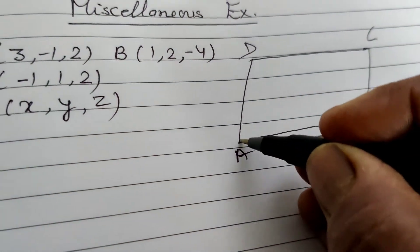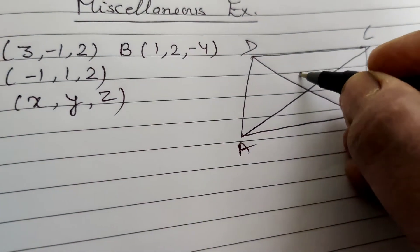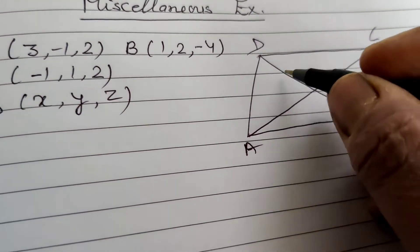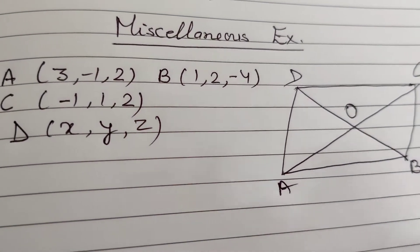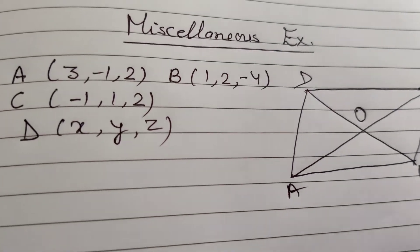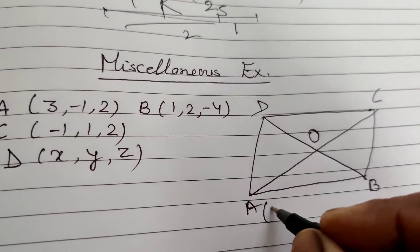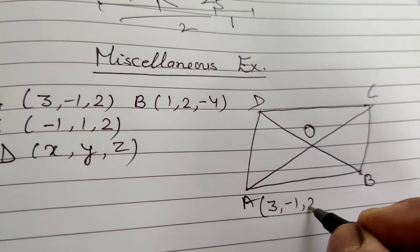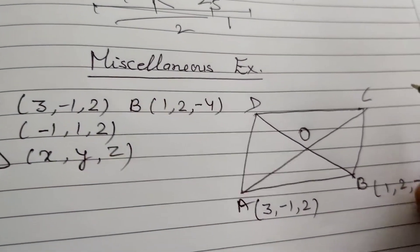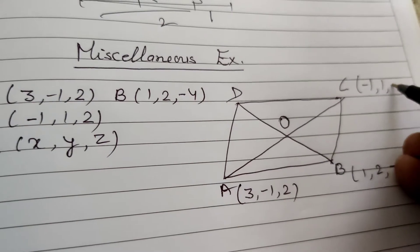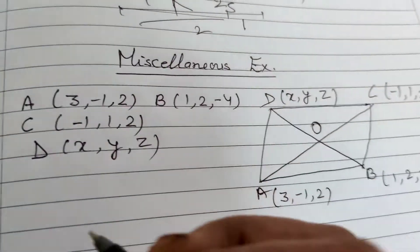AC and BD are the diagonals; they intersect at point O and bisect each other. So O is the midpoint of AC and O is the midpoint of BD. Coordinates: A(3, -1, 2), B(1, 2, -4), C(-1, 1, 2), and D(x, y, z).